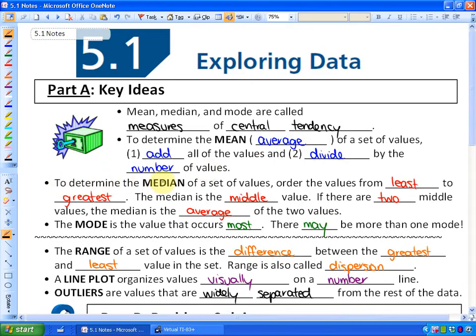To determine the median, which is the second measure of central tendency, of a set of values, order the values from least to greatest. The median is the middle value. If there are two middle values, the median is the average of those two values.